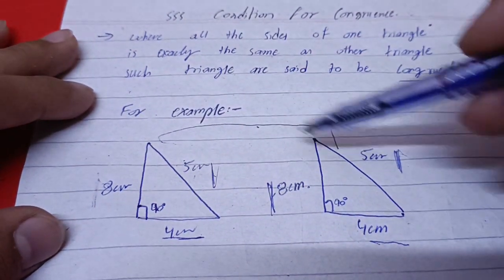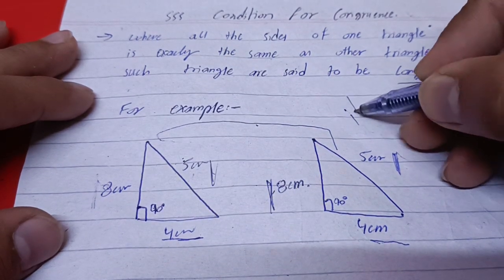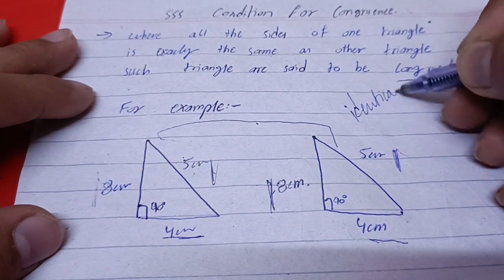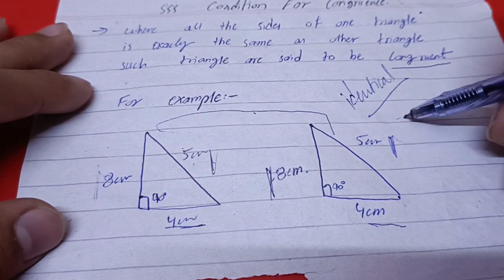So, these two triangles are identical. What is identical? This means that these two are congruent.